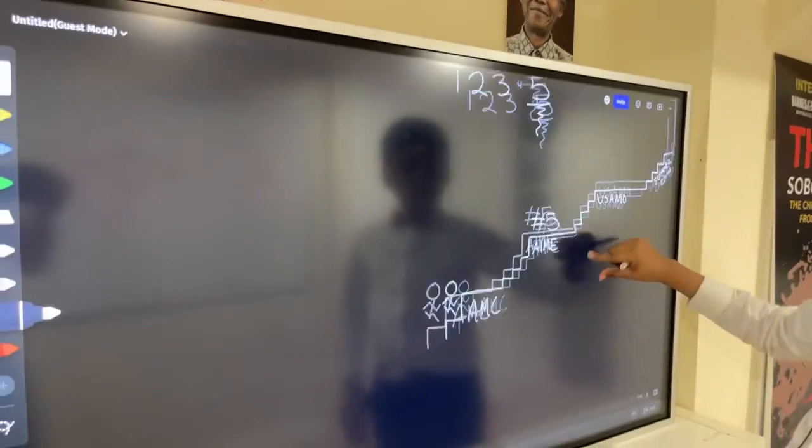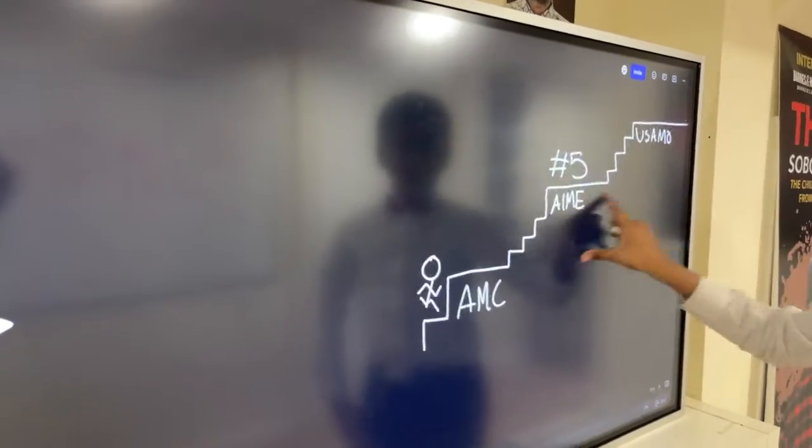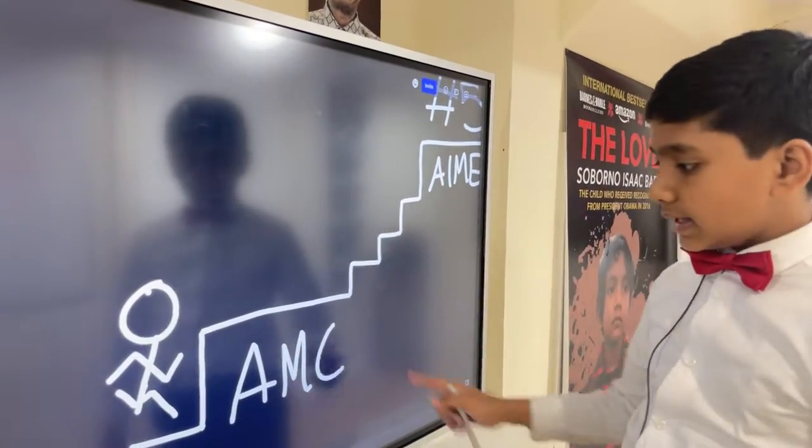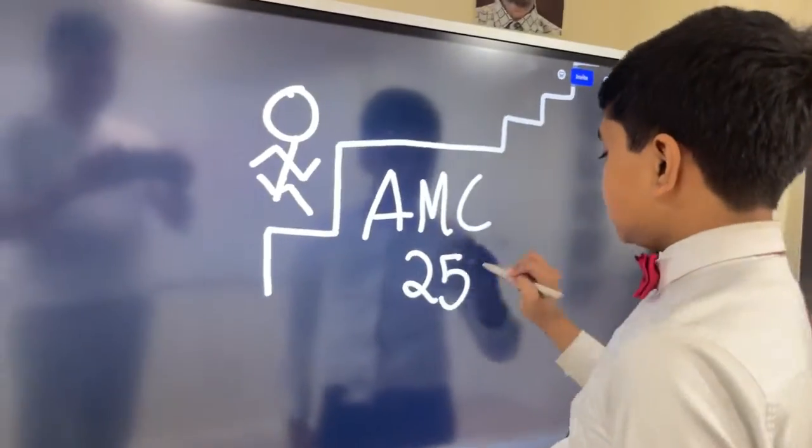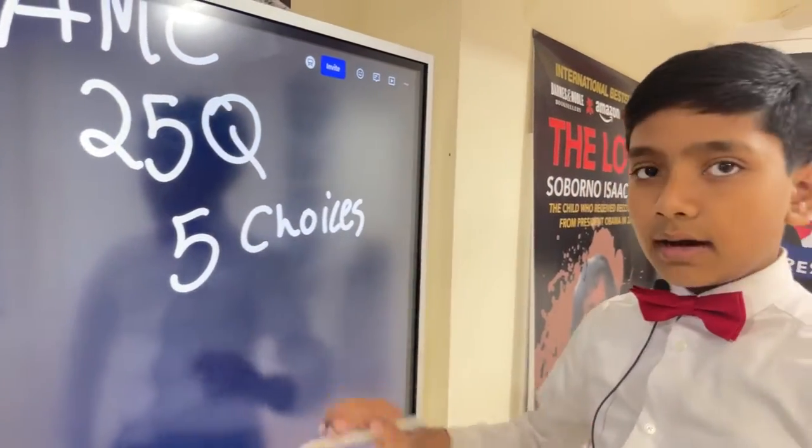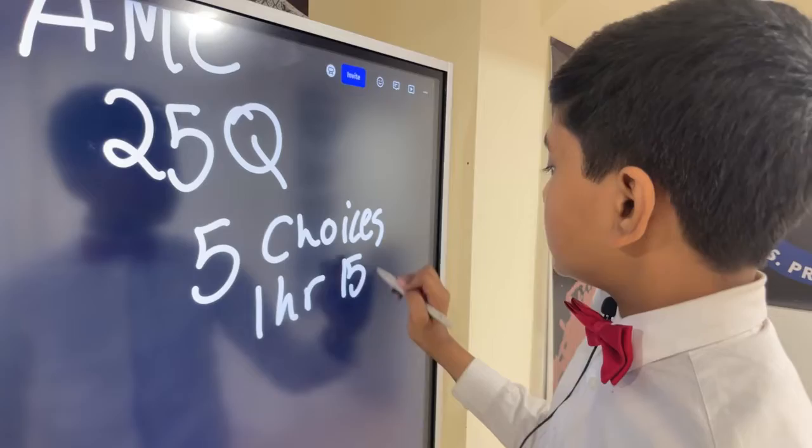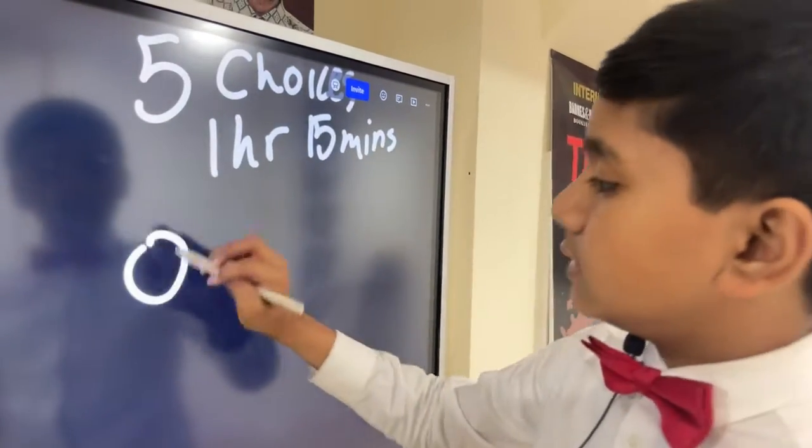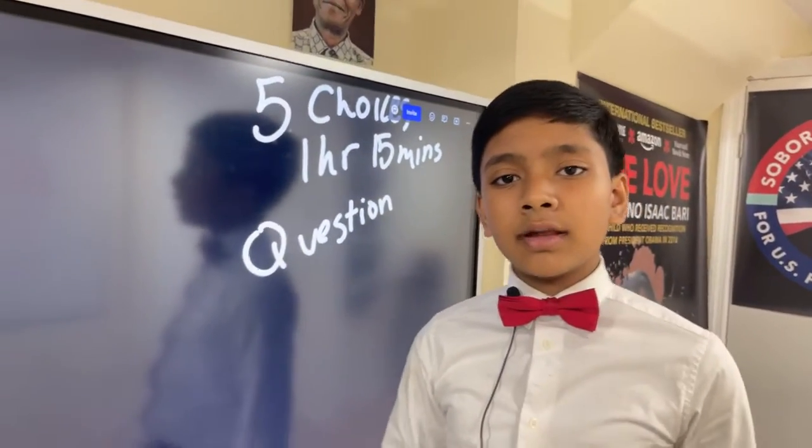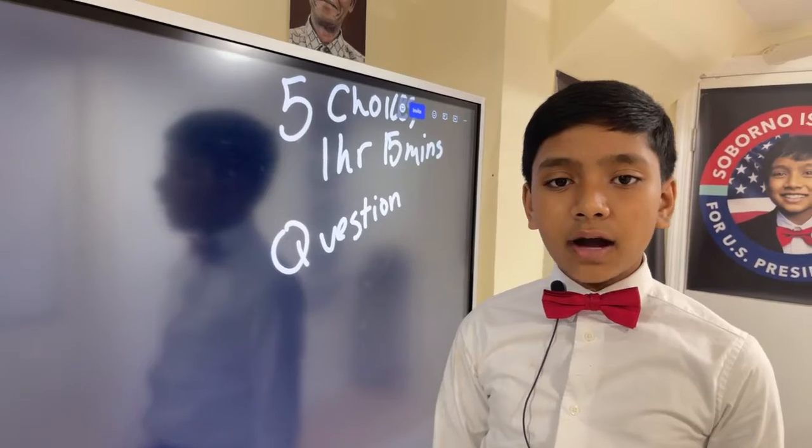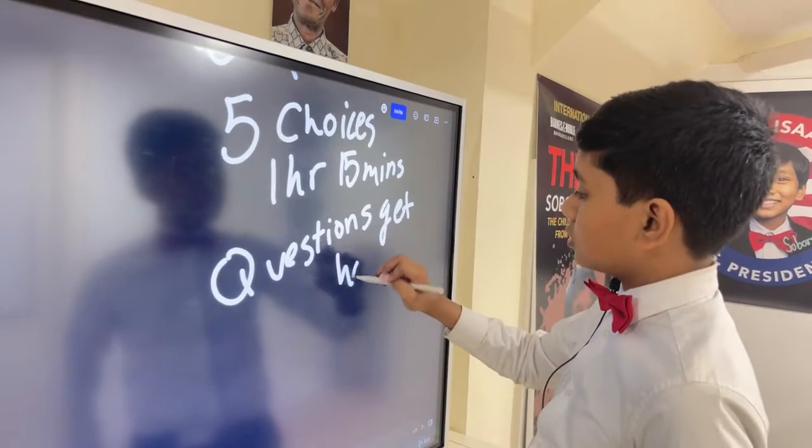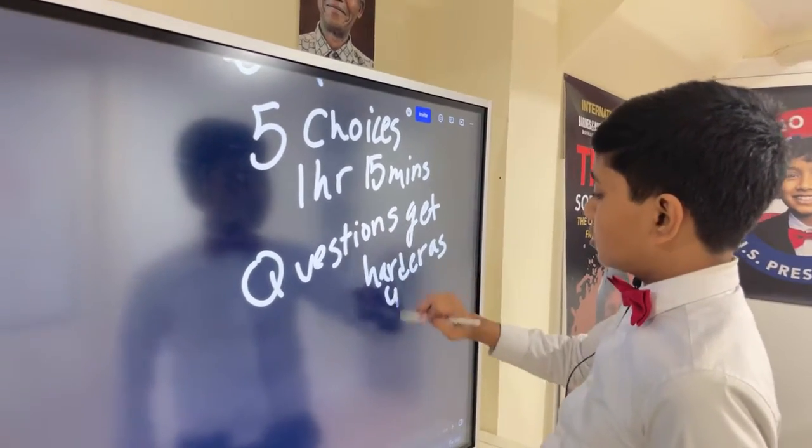Now, if you're not aware of what this staircase means, this is the AMC, one of the hardest math exams in the U.S., and it has 25 questions. Each of them have five choices. You're given one hour and 15 minutes, and the questions get harder as you go on. Question 1, I could take some random fourth grader and they would be able to do it, but question 25, it's basically impossible. So questions get harder as you go on.